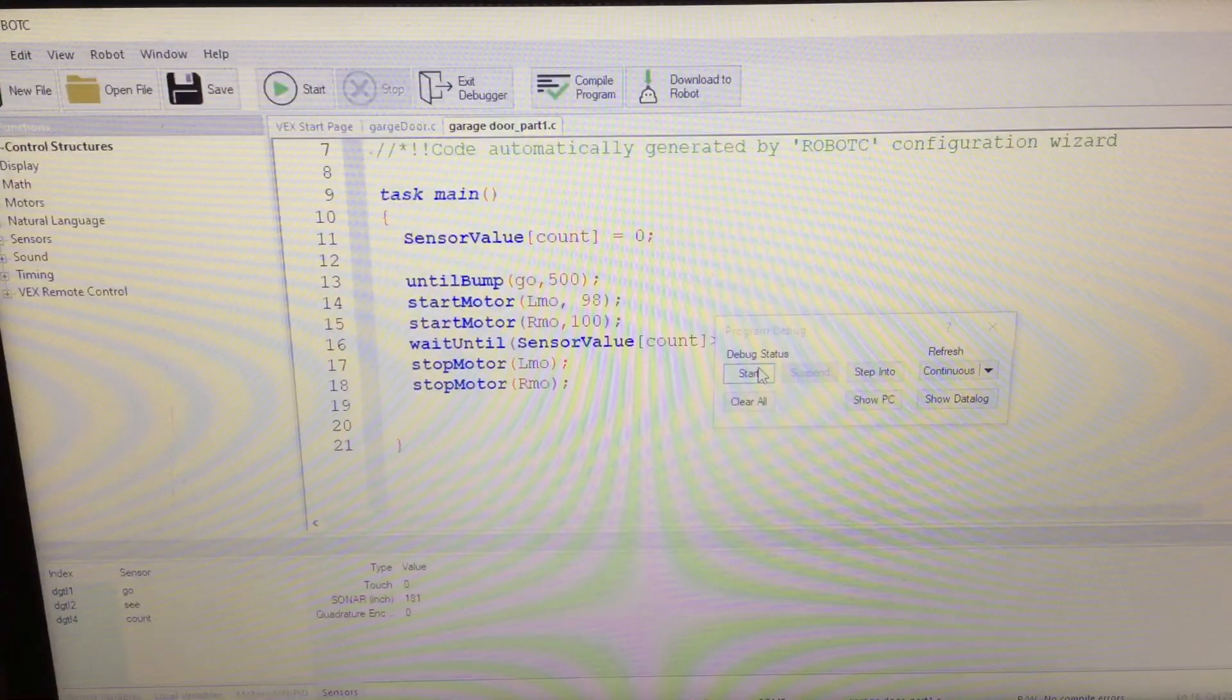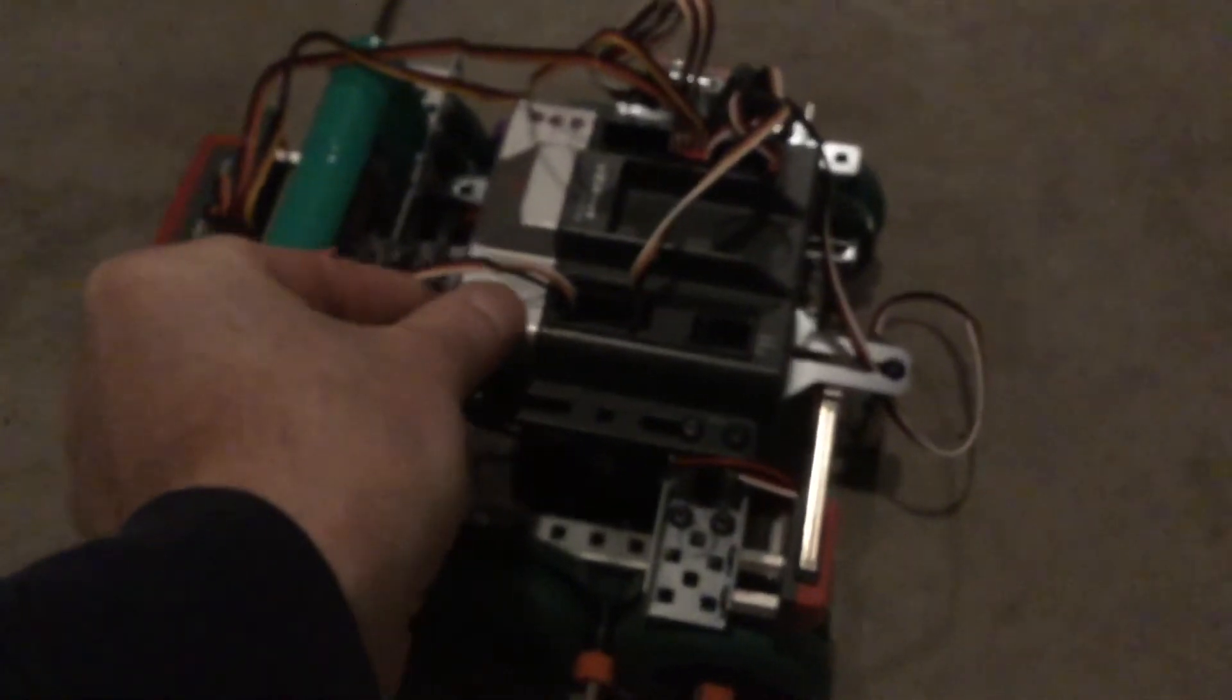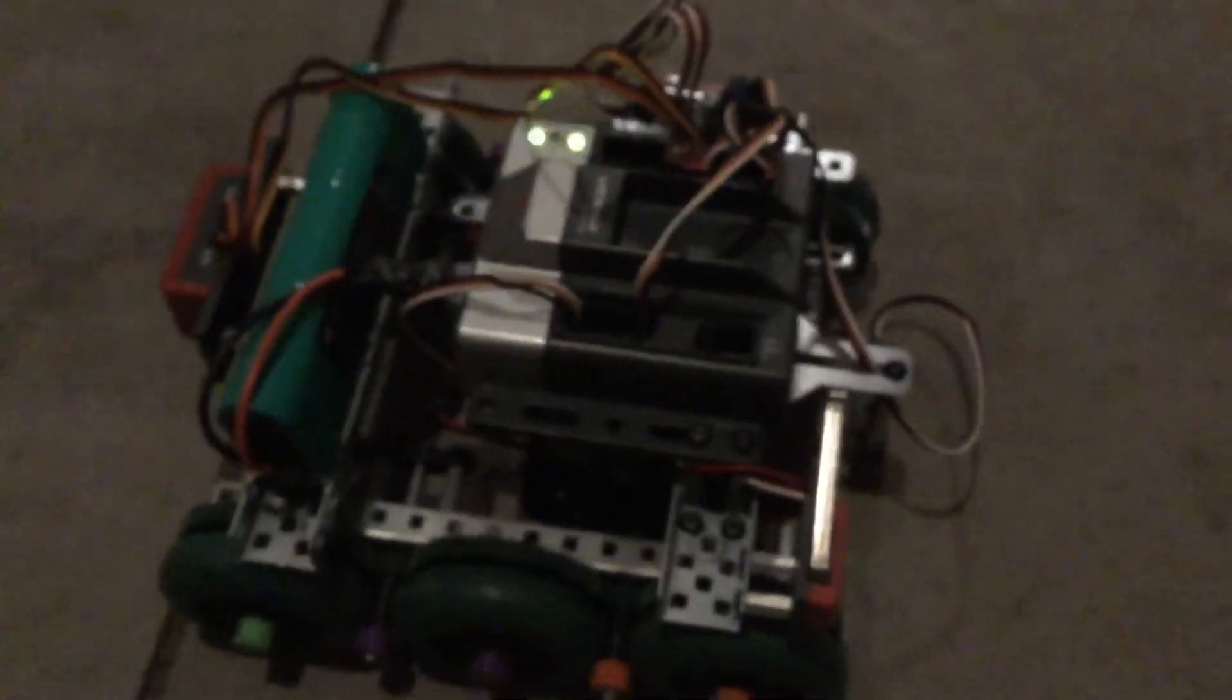So I download the robot, I'll push start, and test the robot. Let's give it a try. Unplug the robot. This we haven't done yet with you guys. We're going to power off the robot, power on the robot. And I push start.